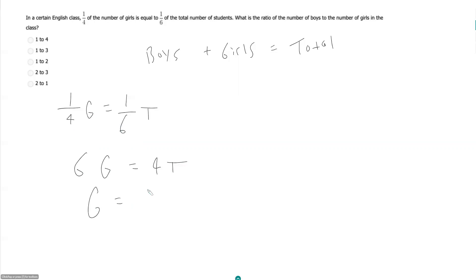So G is equal to four-sixths there, two out of three T.